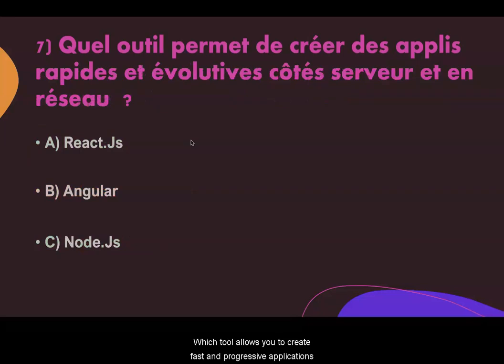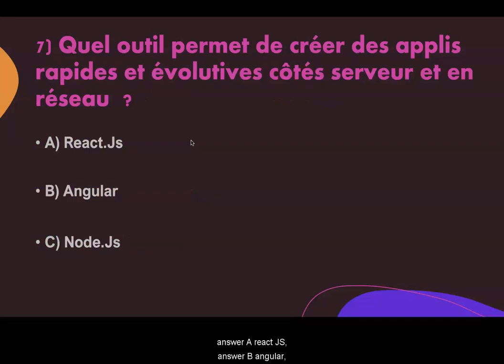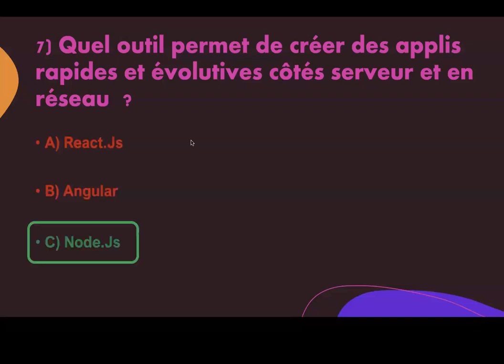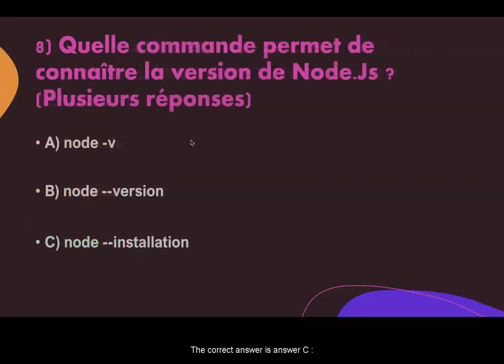Question seven. Which tool allows you to create fast and progressive applications on the server side and in the network? Answer A: React.js. Answer B: Angular. Answer C: Nuxt.js. The correct answer is C, Nuxt.js.